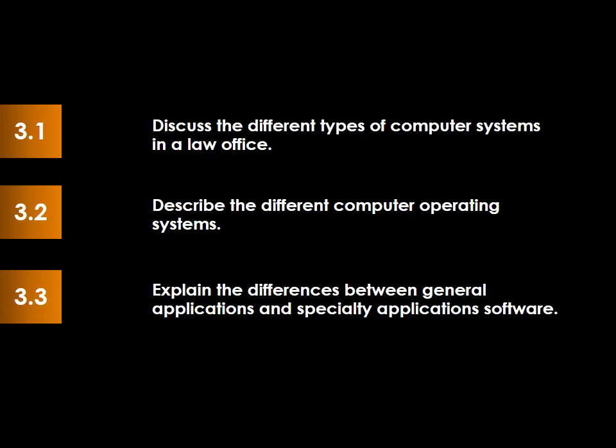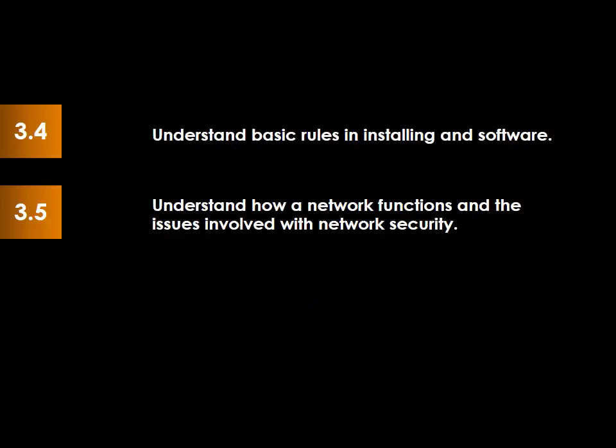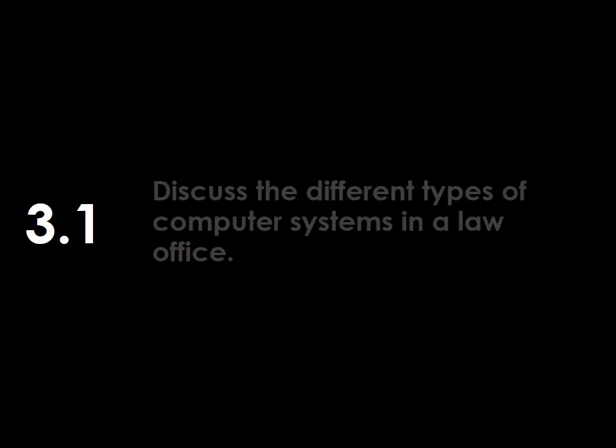The purpose of Chapter 3 is to discuss the different types of computer systems in a law office, describe the different computer operating systems, explain the differences between general applications and specialty application software, understand the basic rules in installing and operating software, and understand how a network functions and the issues involved with network security.